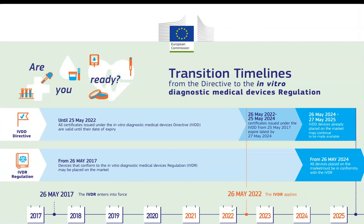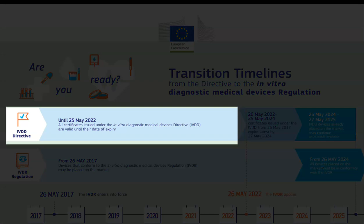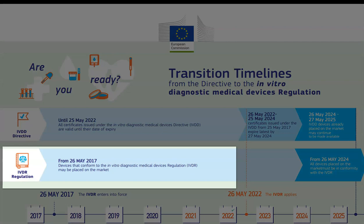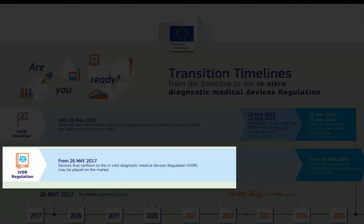Turning now to the IVDR template, also attached as a resource to this lesson. Starting with the top left-hand side: the In Vitro Diagnostic Medical Device Directive certificates are valid until their date of expiry. You can still obtain a certificate of compliance under the directives until that date, i.e. the 25th of May 2022. Looking at the bottom left-hand side of the quadrant: from the 26th of May 2017, devices that conform to the In Vitro Diagnostic Regulation may be placed on the market.